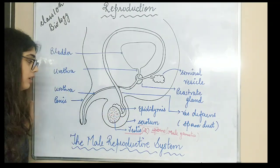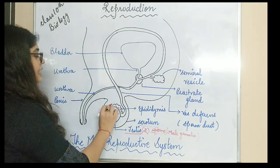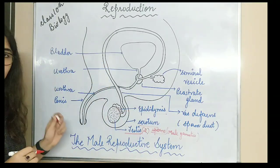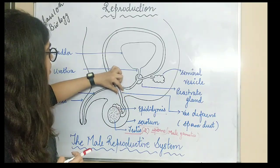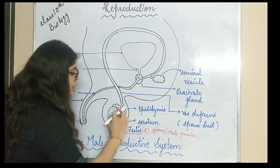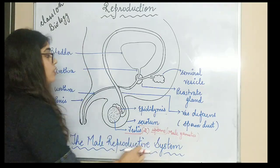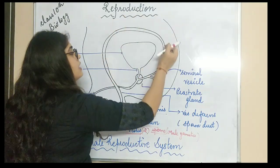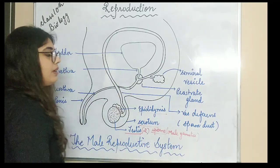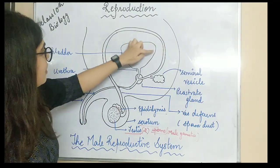The sperm formation takes place here in the testes. Now, these sperms get stored inside the epididymis. After the epididymis, they are carried forward through a tube-like structure called the vas deferens, which is also known as the sperm duct.